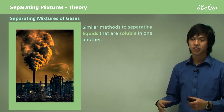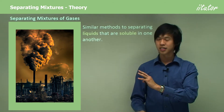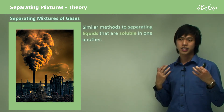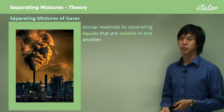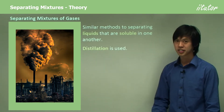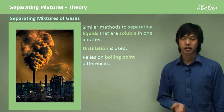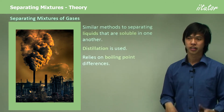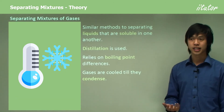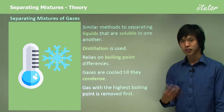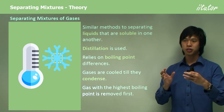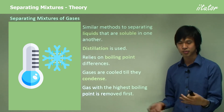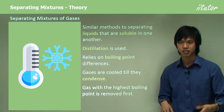Lastly, there are mixtures of gases. Similar methods are used to separate gases as for liquids that are soluble in one another — because gases are essentially soluble in one another. It's called distillation, and again it relies on boiling point differences. But it's slightly different because instead of heating, we actually cool the gases. Gases are cooled until they condense. Gases with the highest boiling point condense first, become liquids, and are siphoned off. Then you continue cooling and another gas condenses, and you keep going until you've reached the last gas.